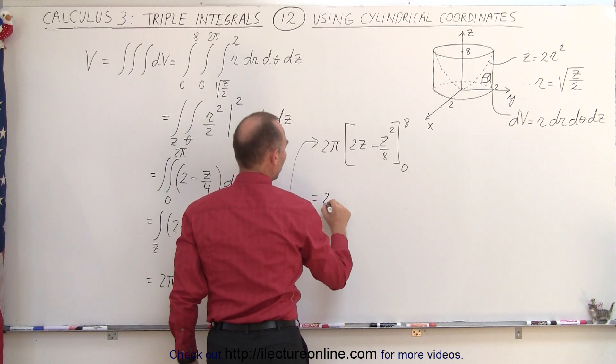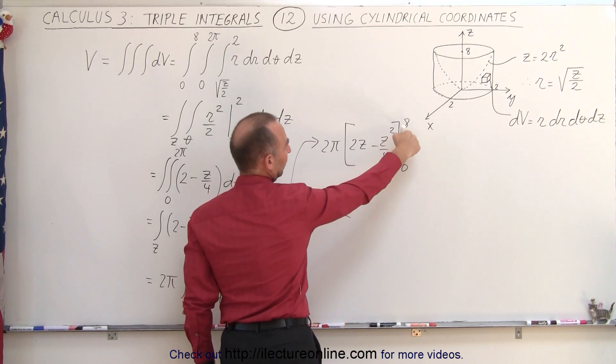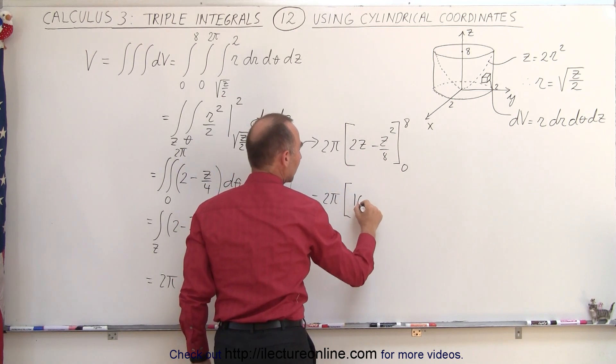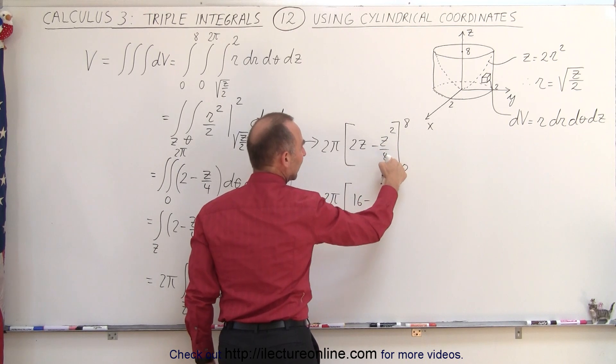So, this becomes equal to 2 pi times, when plugging the lower limit, we get nothing, we only plug in the upper limit, so 2 times 8, which is 16, minus 8 squared, which is 64, divided by 8, which is 8.